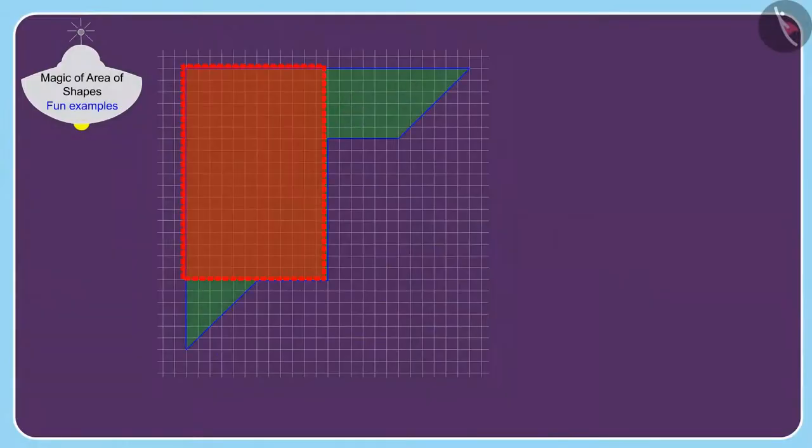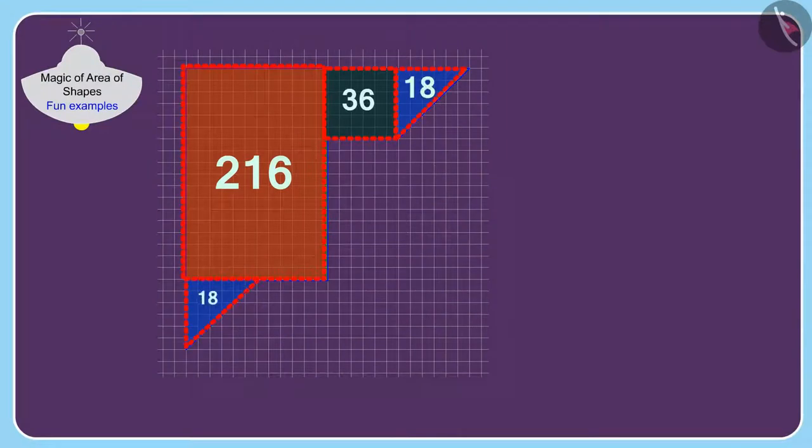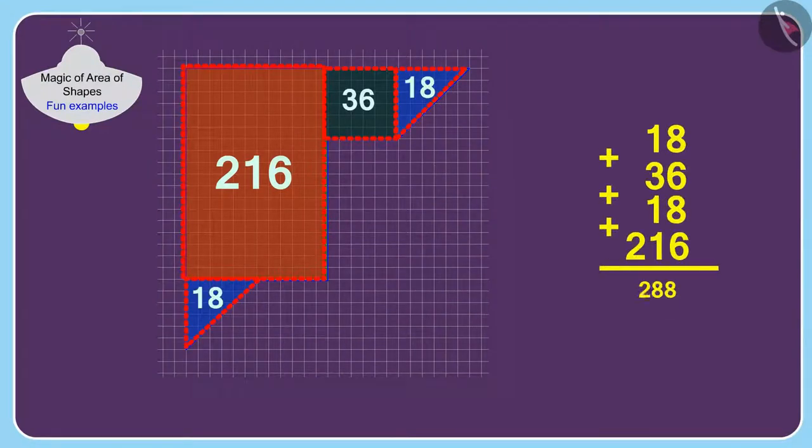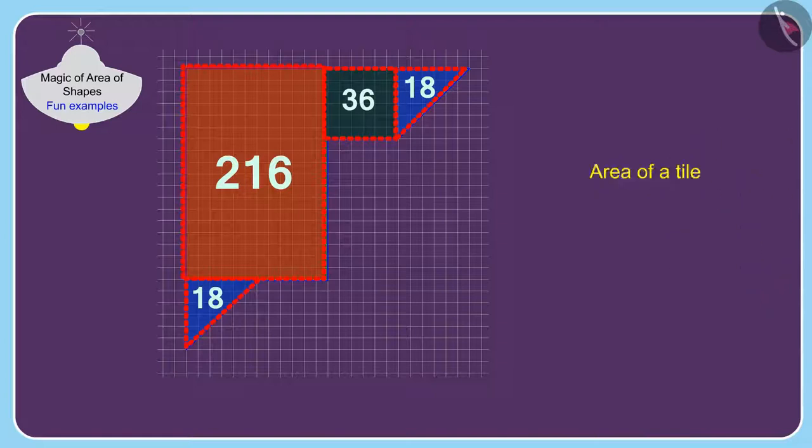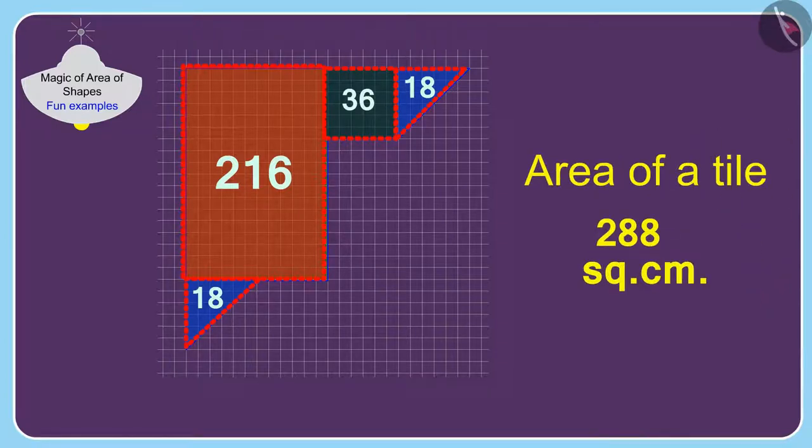First, we will find the area of a tile in this way. The area of a tile is 288 square centimeters.